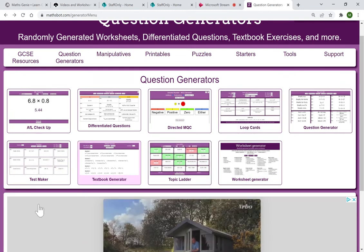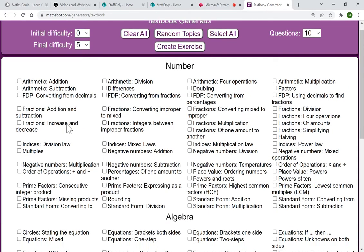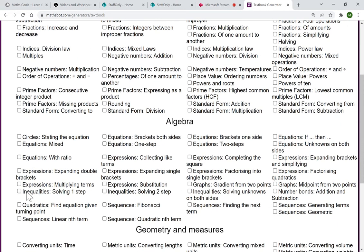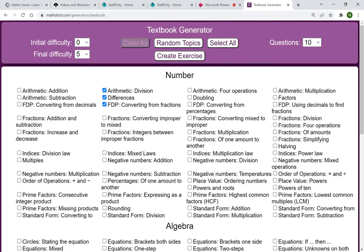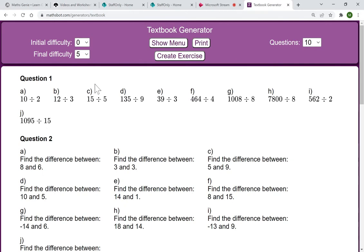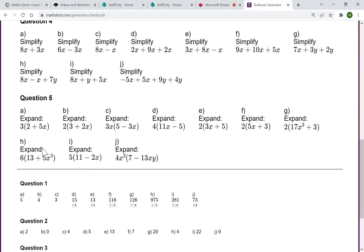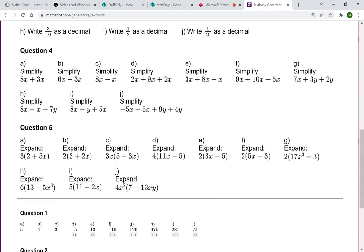Textbook generator. One of my colleagues showed me this. Fantastic. You can just pick some options. That one. That one. Difficulty. Create the exercise. And it just gives you a load of questions. And then at the bottom, the answers. So that's really simple.